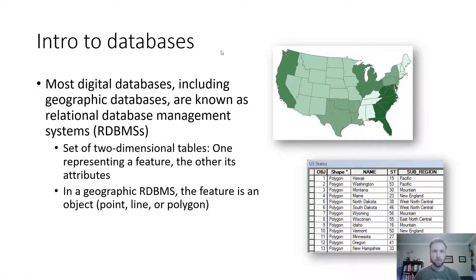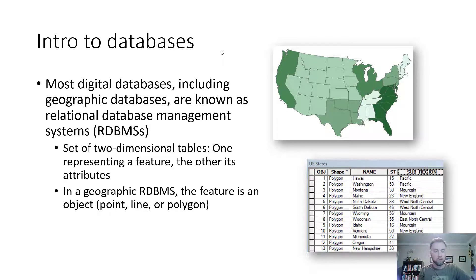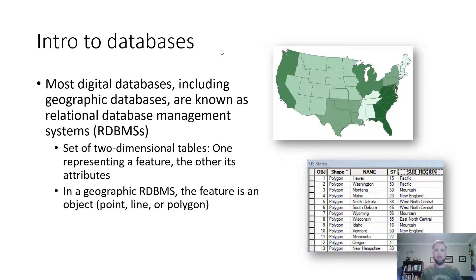Most digital databases, including geographic databases, are known as relational database management systems, or RDBMS. It's not just a collection of files — it's also the file structure, how the files are organized, how they relate to one another, and how you can pull data from a database. Think of it as a highly organized file recall system. If you're looking for a file that starts with the letter M, you can type M and pull all the data that starts with M. The underlying system that presents data to the user is the RDBMS.